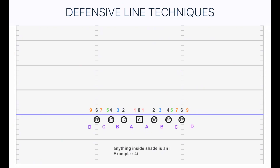What's weird is having the seven techniques on the inside. So you go from zero, one, two, three, four, five, seven, and then back to six, back to nine. That is weird, but that's how they've done it for a long time. Seven techniques are technically inside shade of the tight ends. But this is how I would refer to it personally — I go with six-eye.